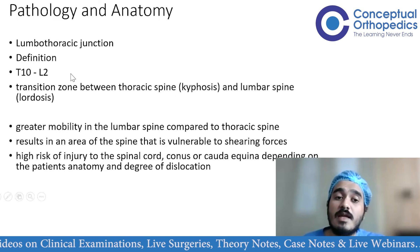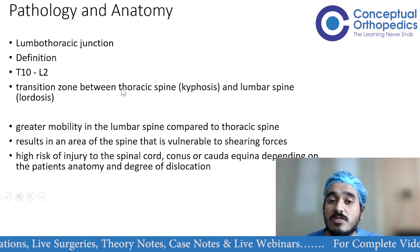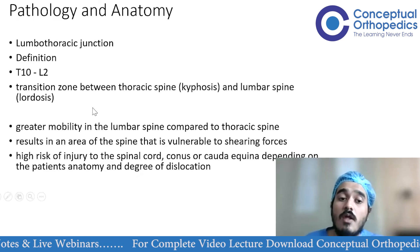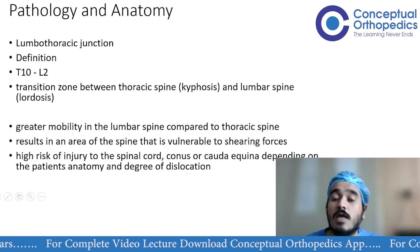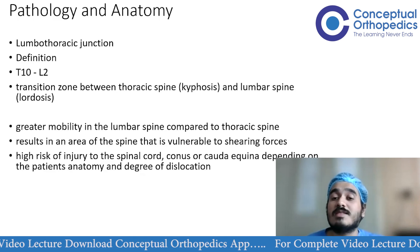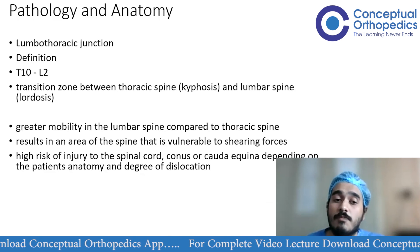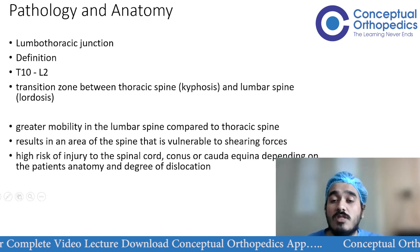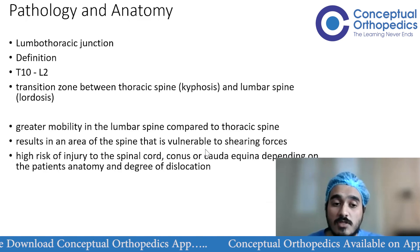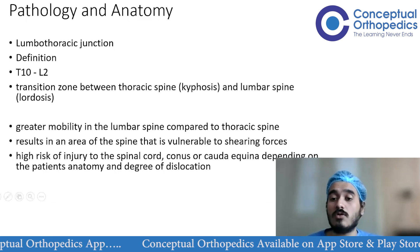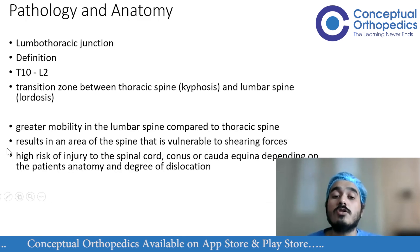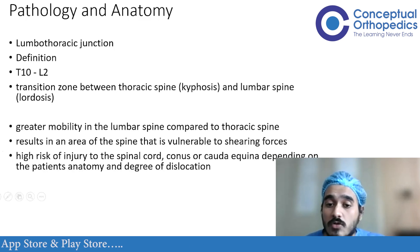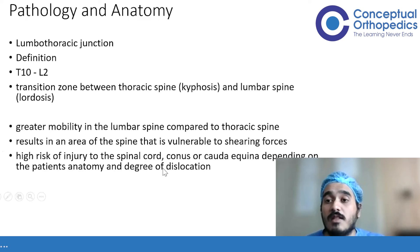The thoracolumbar junction, between T10 and L2, is the most common area for these injuries. This is because it is a transitional zone between thoracic kyphosis and lumbar lordosis — a high-stress zone. The lumbar spine is far more mobile than the thoracic spine, which is restricted by the rib cage, making this transitional area highly vulnerable to shearing forces. There is also high risk of injury to the spinal cord, conus medullaris, or cauda equina depending on the patient's anatomy and degree of dislocation.